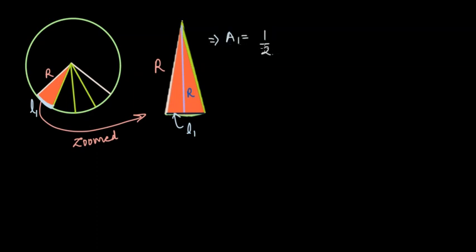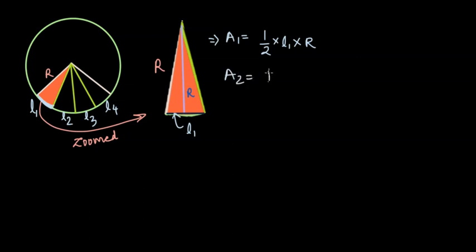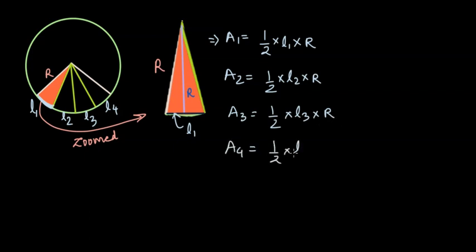So how can we get the area A1 for the orange sector? It will be half times base L1 times the radius R. If I mark L2, L3, and L4 for the rest of the sectors, I'll get A2 = ½ × L2 × R, A3 = ½ × L3 × R, and A4 = ½ × L4 × R.